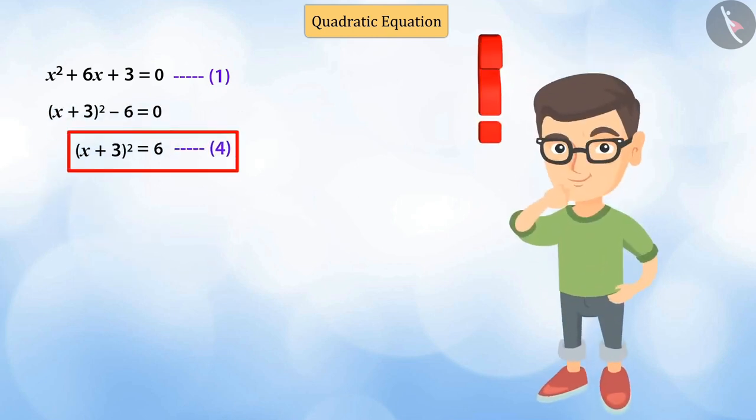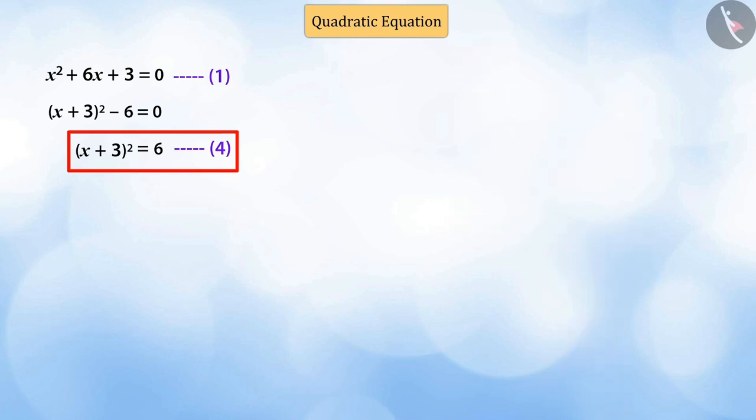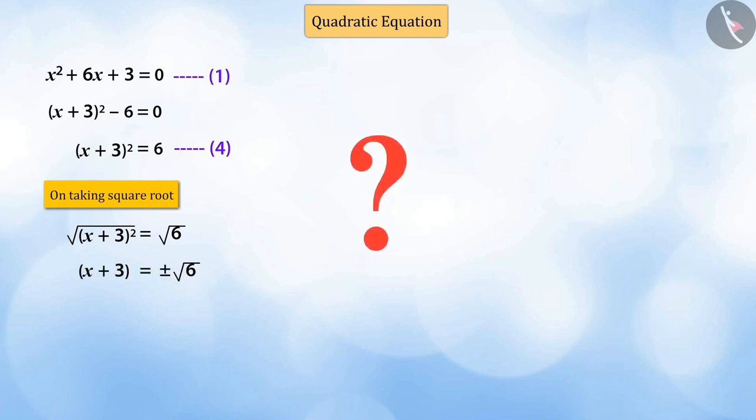Can you now find the value of x by solving equation 4? Well done! If we take the square roots of both the sides of equation 4, we get x plus 3, which is equal to plus minus root 6. Can you tell me why didn't we just consider positive root 6? That's because the square of both positive root 6 and negative root 6 is 6.